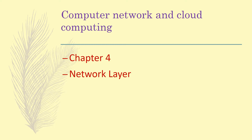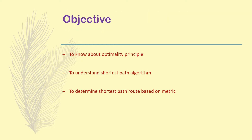Before starting the discussion of the shortest path algorithm, we will briefly cover the optimality principle, which is the key concept behind it. We will also discuss the metrics used — whether it is delay, cost, distance, or number of nodes — and what parameter or metric needs to be taken into account. Additionally, routing may be done statically or dynamically, and we will look at whether we go for an adaptive or non-adaptive approach.